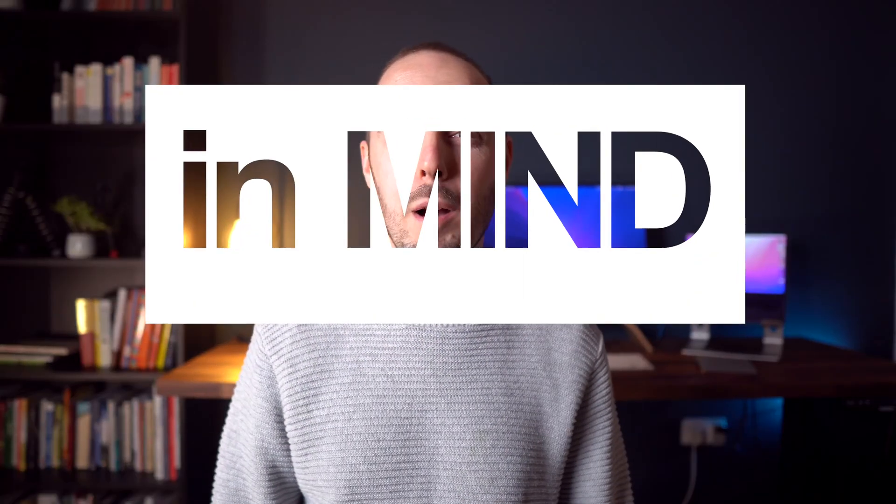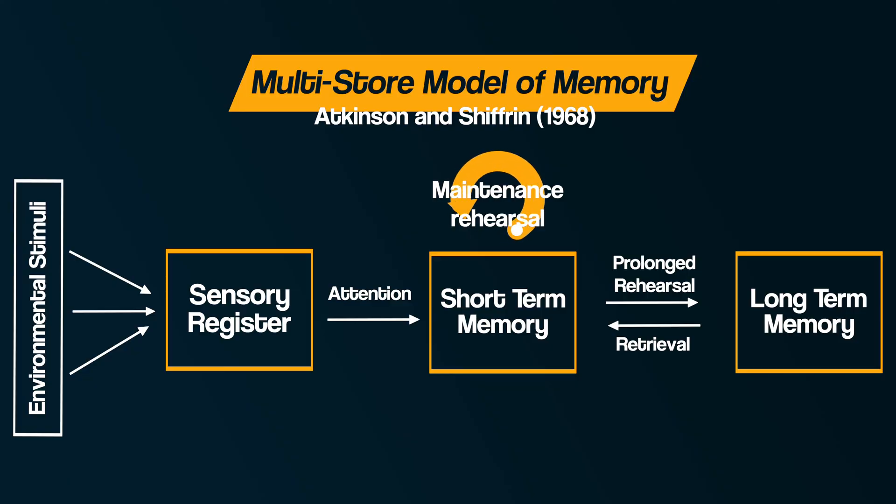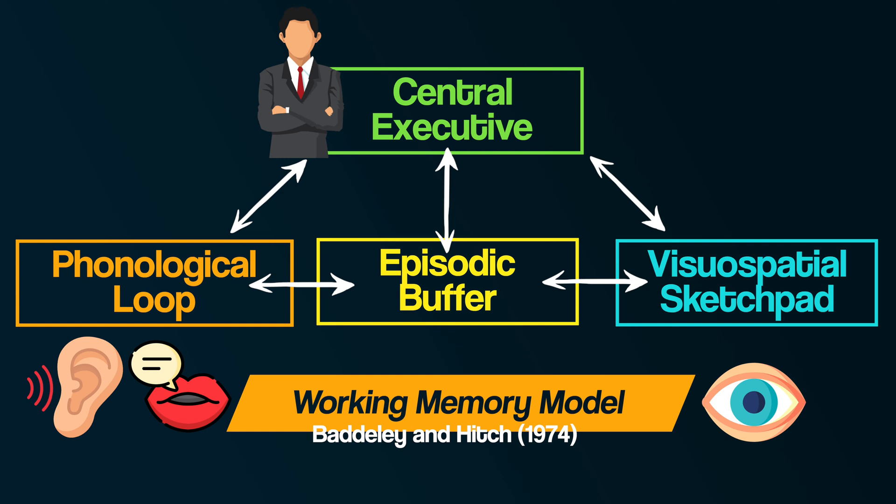Hey everyone, welcome back to Bear It In Mind. This video is part of a series exploring our memory. We've previously explored Atkinson and Shiffrin's multi-store model of memory and the working memory model proposed by Baddeley and Hitch. In this video we're going to explore long-term memory — not a model, but rather the research into different types of long-term memory. There are three types that you need to know.